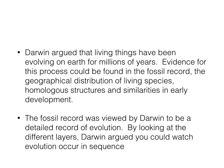Darwin argued that things have been evolving for millions of years. Evidence for this can be found in the fossil record, geographic distribution of species, homologous structures, and similarities in early development. The fossil record was viewed by Darwin to be a detailed record of evolution. By looking at the different layers in stratified rock, Darwin argued you could watch evolution occur in sequence.